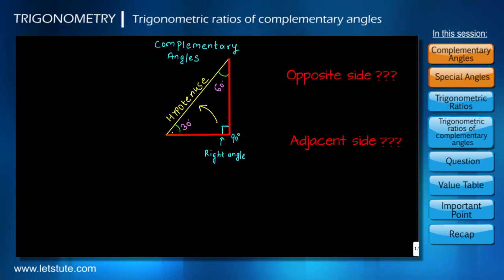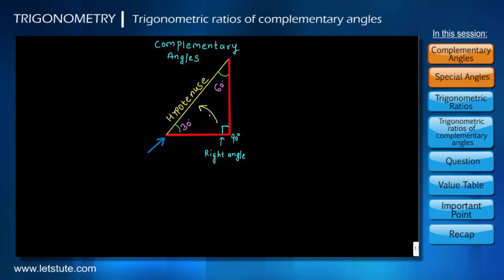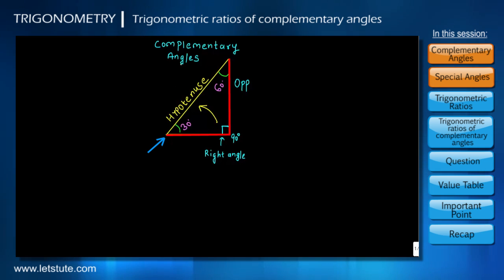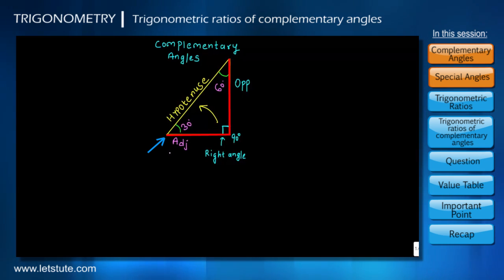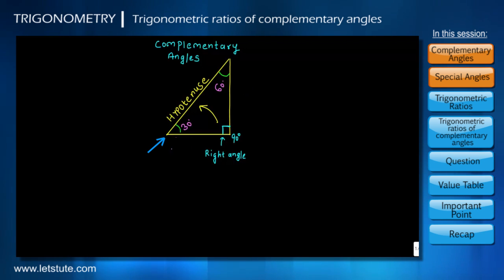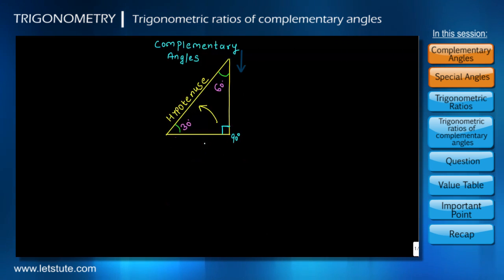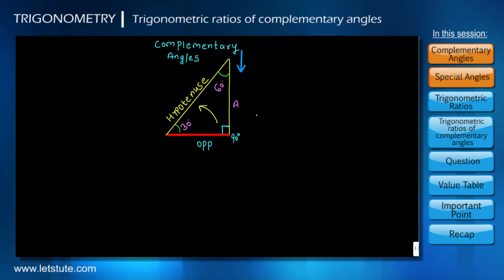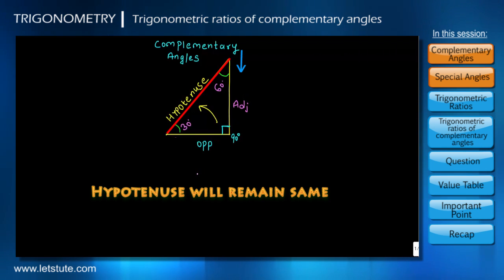So if I look from the 30 degrees angle, the side opposite to 30 degrees is called the opposite side, and the side adjacent to 30 degrees is called the adjacent side. Now if I view the same sides from the 60 degrees angle, this side is the opposite side and this side is called the adjacent side. Please remember, the hypotenuse will remain the same and does not change at all.